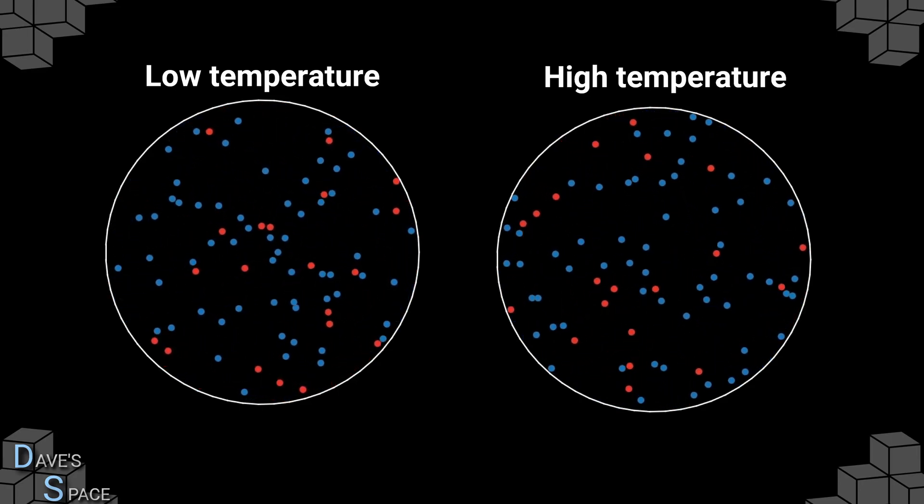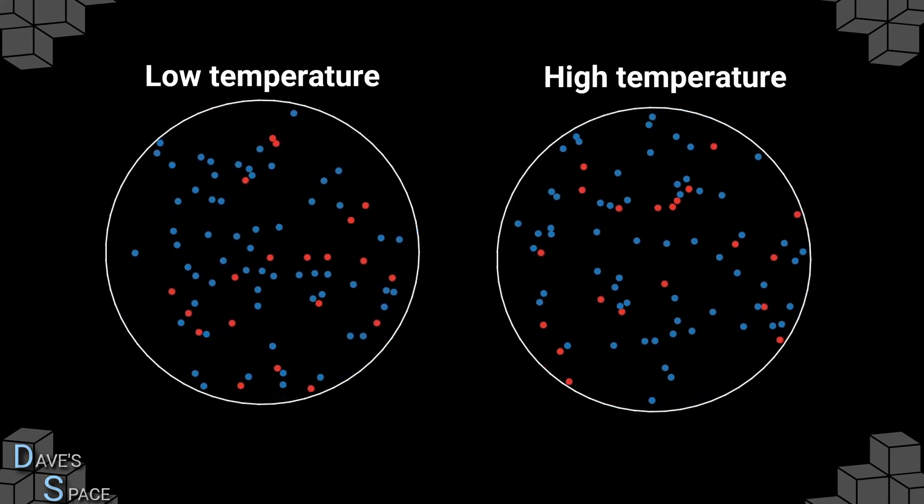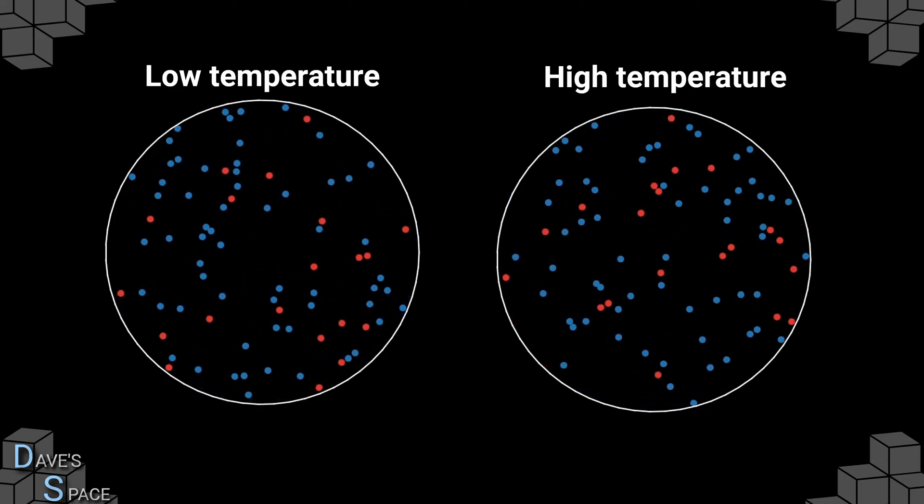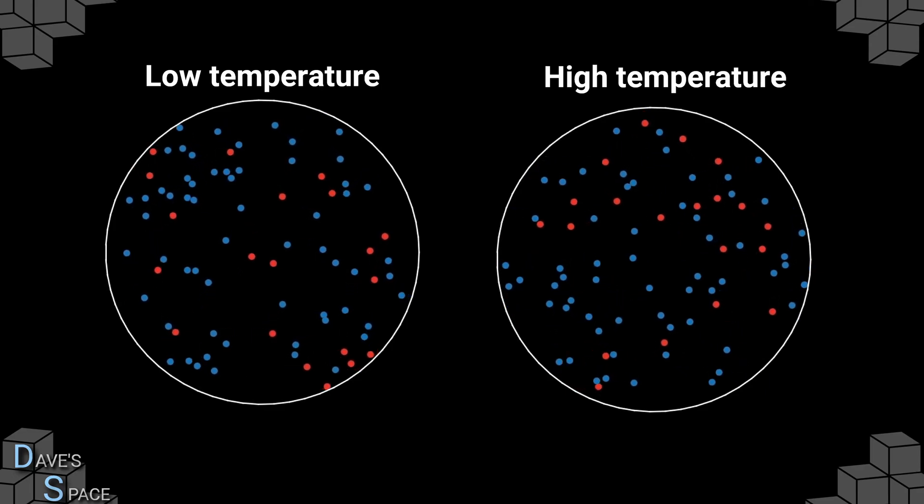If you've seen any of my other video series about modelling thermodynamics in Python, you will have seen that two different temperatures of particles will rapidly equilibrate.